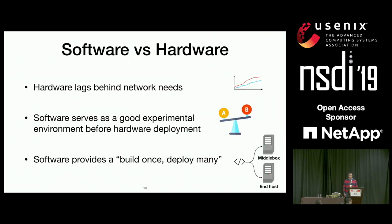In this work, we focus on software. The reason is that hardware typically lags behind network needs. While current servers can be pushing tens of thousands of flows, current network cards provide only a few thousand — maybe 10,000 — hardware queues. Software also provides a good experimentation playground for testing new building blocks and algorithms at relatively low cost, and a 'build once, deploy many' model where the same code can be used for middleboxes or end hosts.